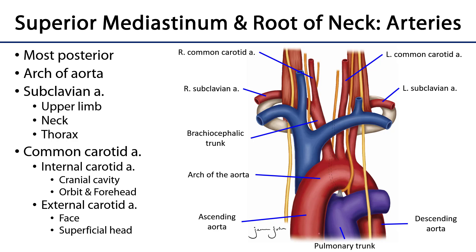The aorta, which is the major conduit of arterial blood through the body, begins as the ascending aorta, which leaves the left ventricle of the heart. That ascending aorta transitions into the arch of the aorta, and then the arch of the aorta into the descending aorta. That descending aorta has two parts: the thoracic aorta, which traverses the thorax, and then the abdominal aorta, found in the abdominal pelvic cavity.